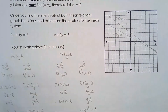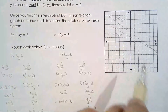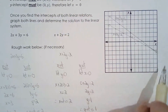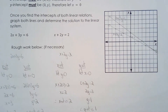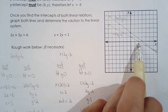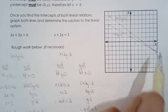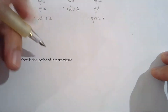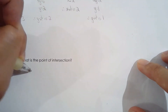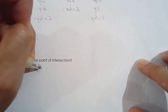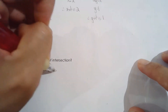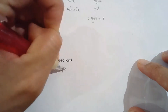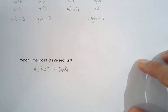Looking at the graph, you can identify the point of intersection yourself, which also corresponds to the solution of the linear system. Counting along the grid, the point of intersection is (6, -2). Therefore the point of intersection is (6, -2).